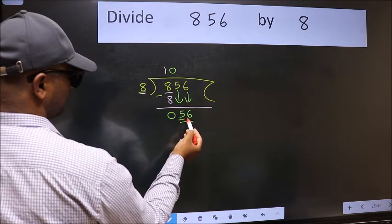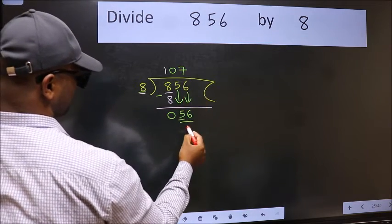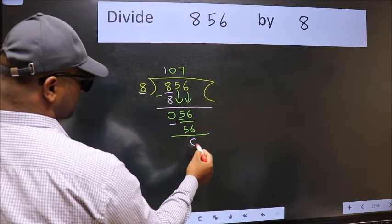Now, 56. When do we get 56 in 8 table? 8 sevens 56. Now we should subtract. We get 0.